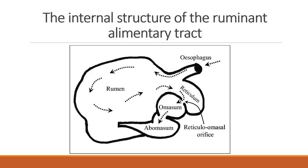The alimentary canal of the ruminant consists of four stomach compartments: the rumen — which is the largest part — then the reticulum, omasum, and abomasum. Food moves through the esophagus into the rumen. Inside the rumen there are small tongue-like protrusions called papillae, which can be seen with the naked eye. These are used to absorb the breakdown products of microbial digestion, which are mainly volatile fatty acids.